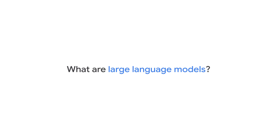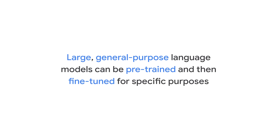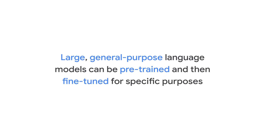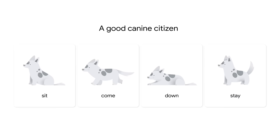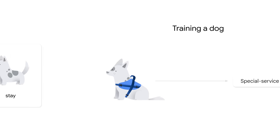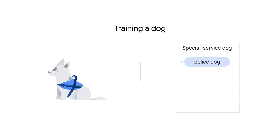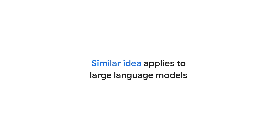So what are Large Language Models? Large Language Models refer to large, general-purpose language models that can be pre-trained and then fine-tuned for specific purposes. Imagine training a dog. Often you train your dog basic commands such as sit, come, down, and stay. These commands are normally sufficient for everyday life and help your dog become a good canine citizen. However, if you need a special service dog such as a police dog, a guide dog, or a hunting dog, you add special trainings. This similar idea applies to Large Language Models.